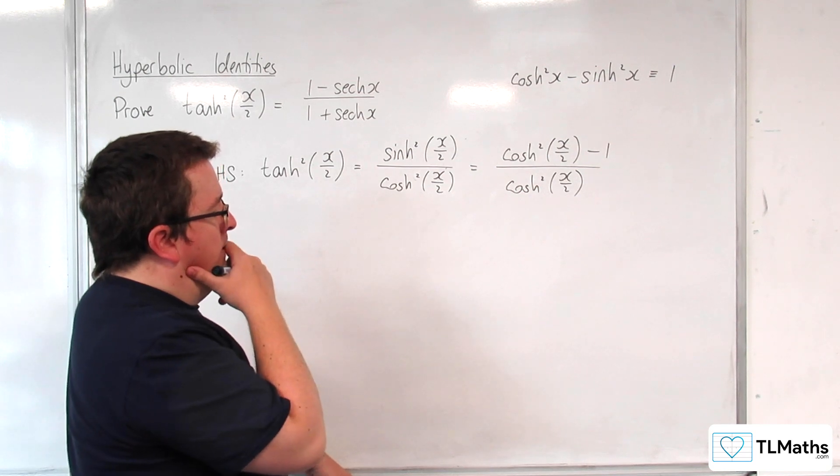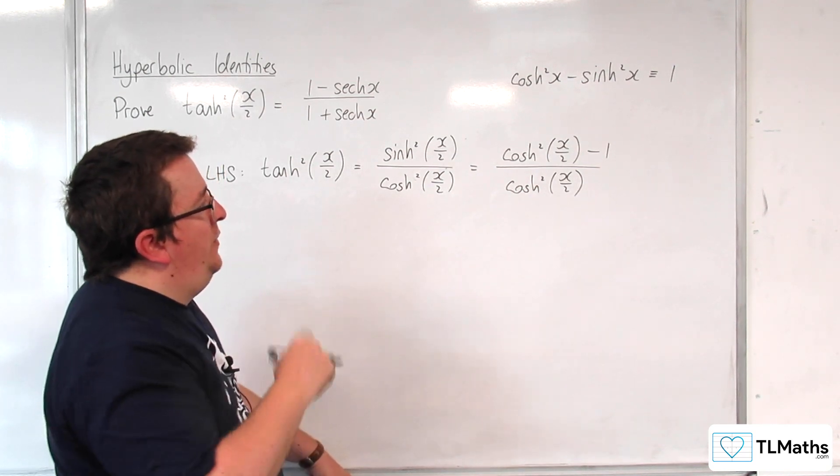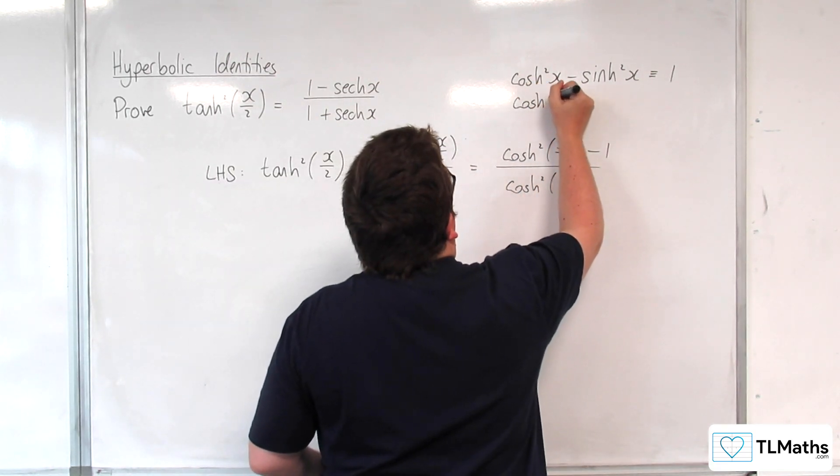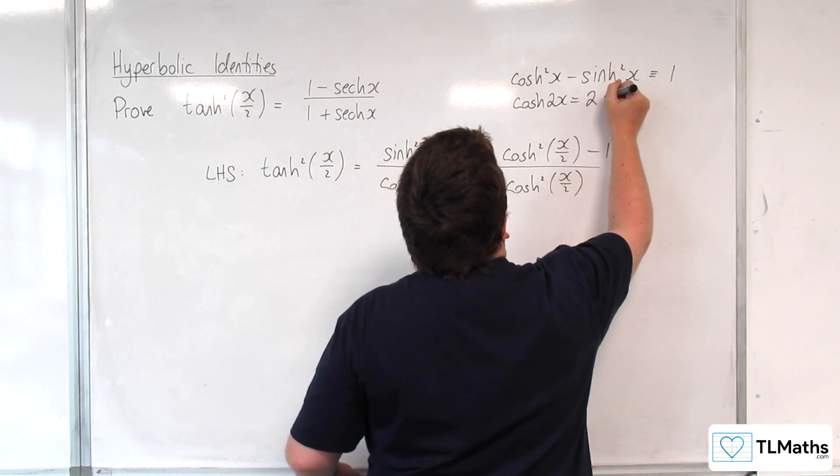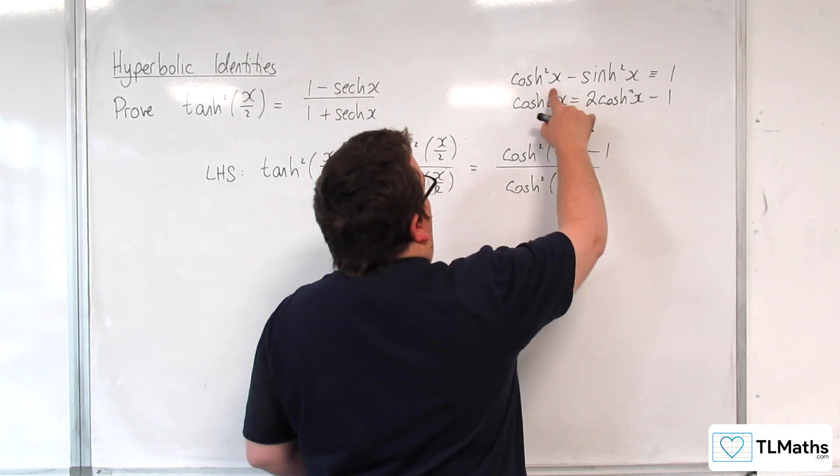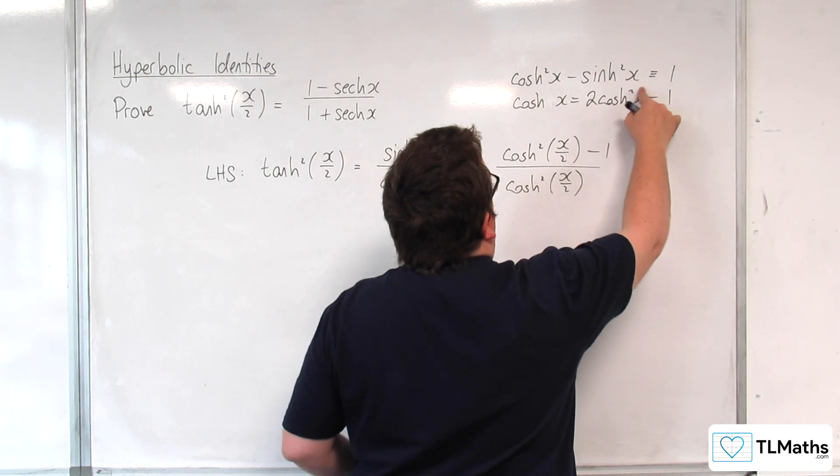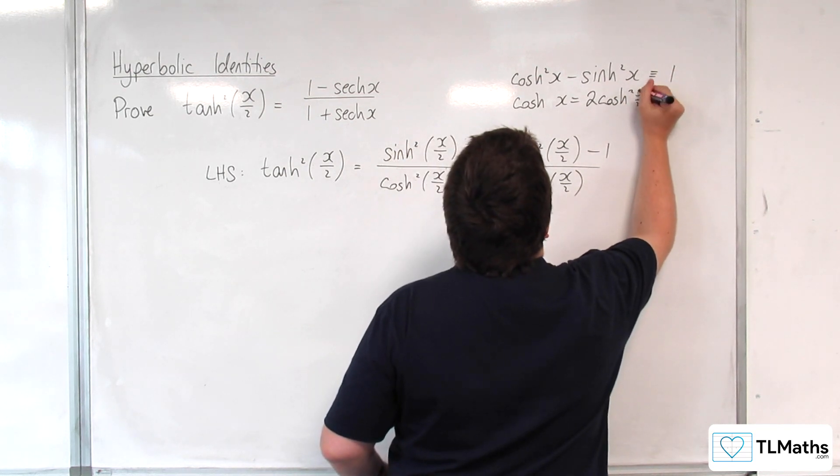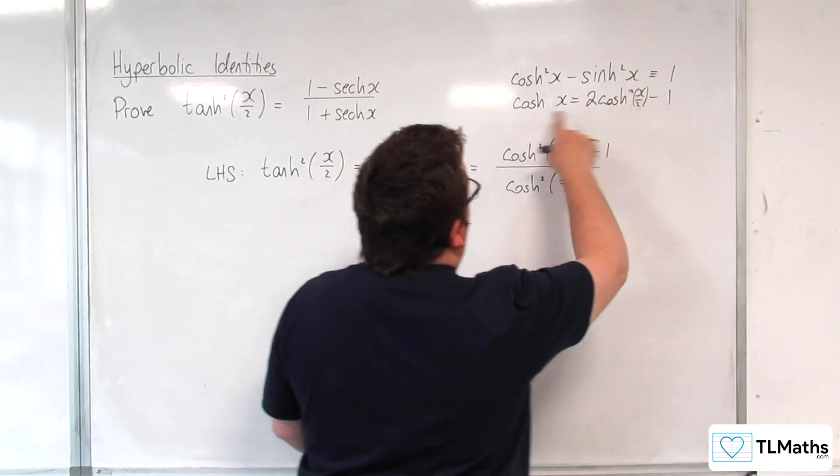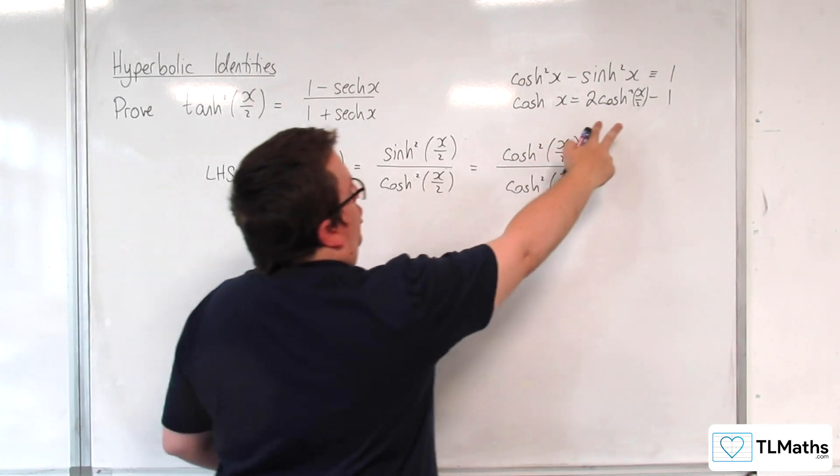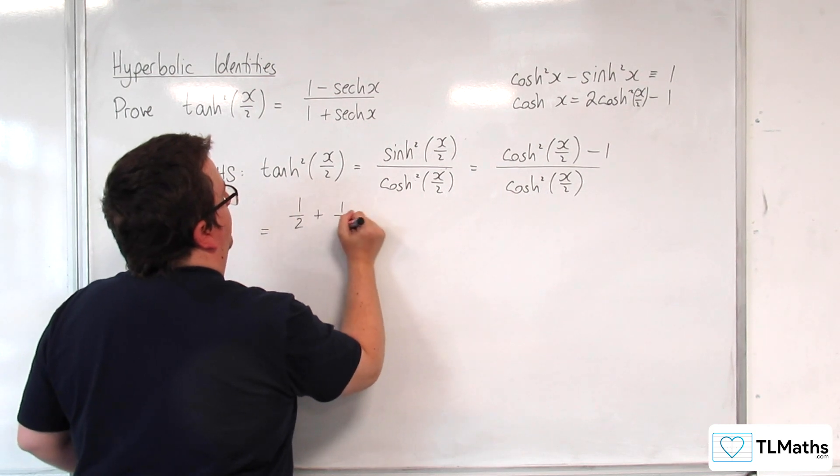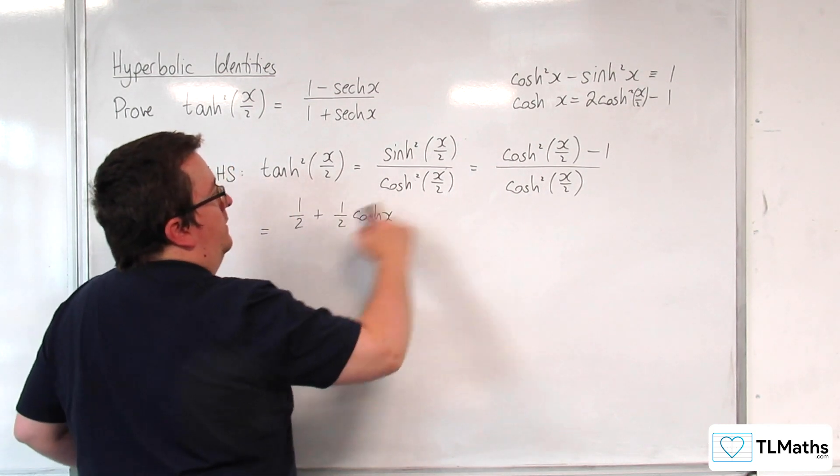Now, let's think about the double angle formula. So, we have that cosh of 2x is 2 cosh squared x minus 1. So, that means that cosh of x is 2 cosh squared of x over 2 take away 1. So, that means that I can rearrange this and write cosh squared of x over 2 as 1 half plus 1 half cosh x.